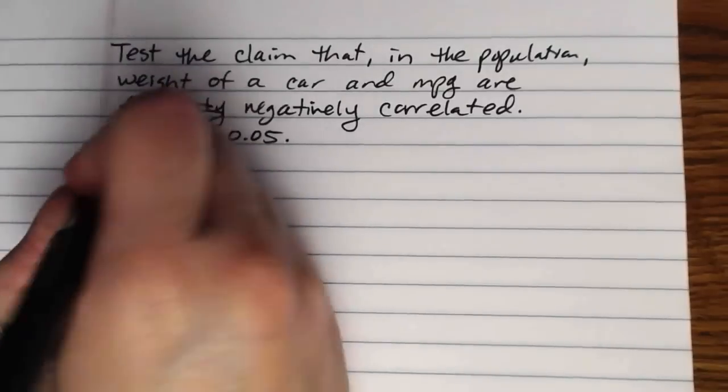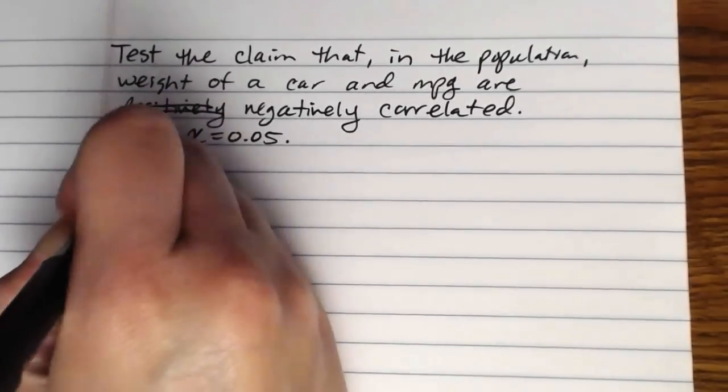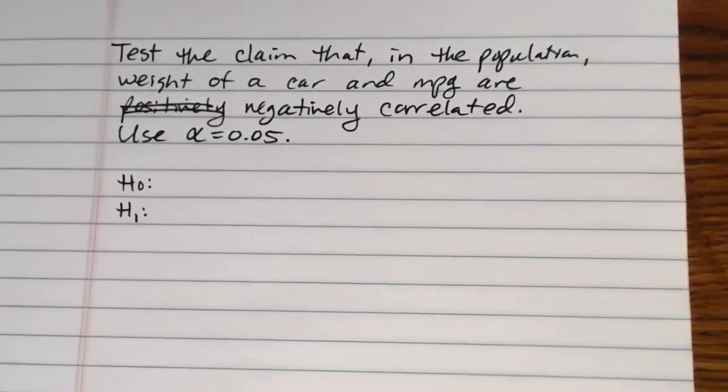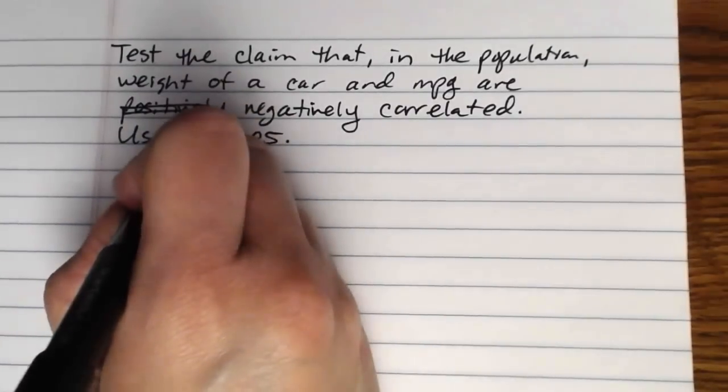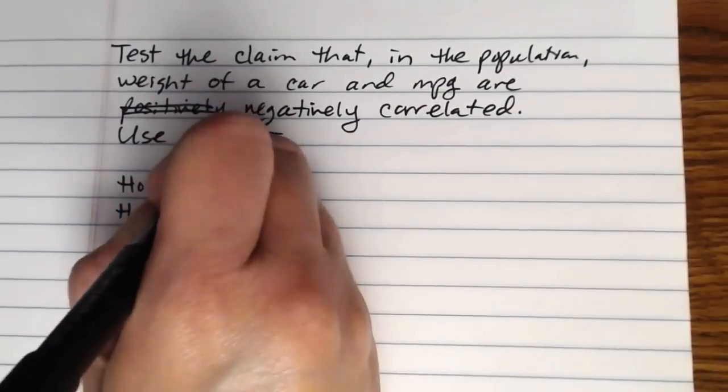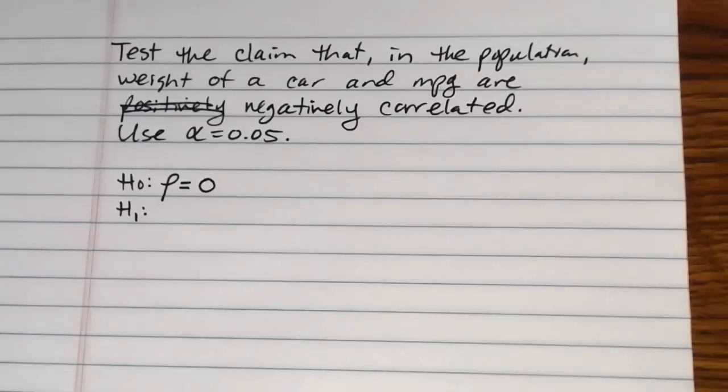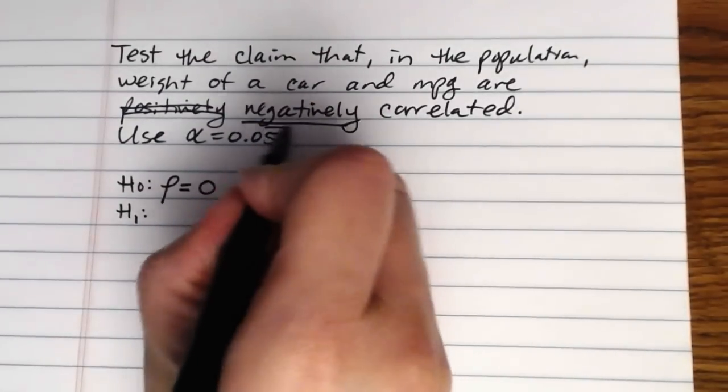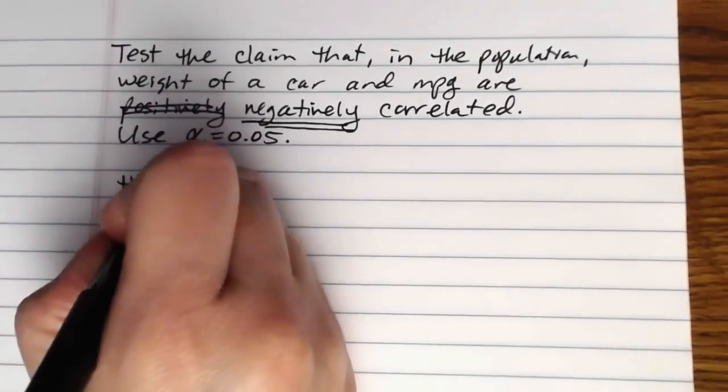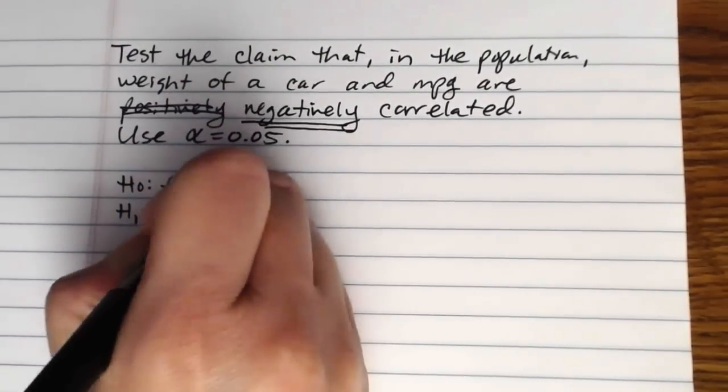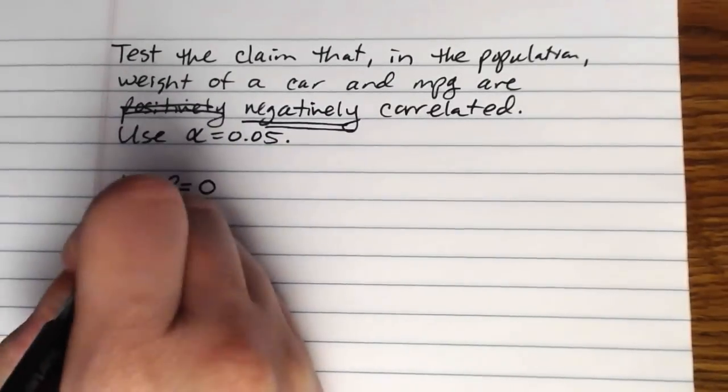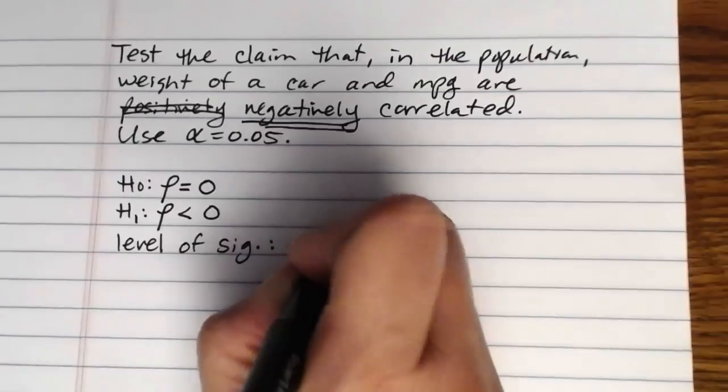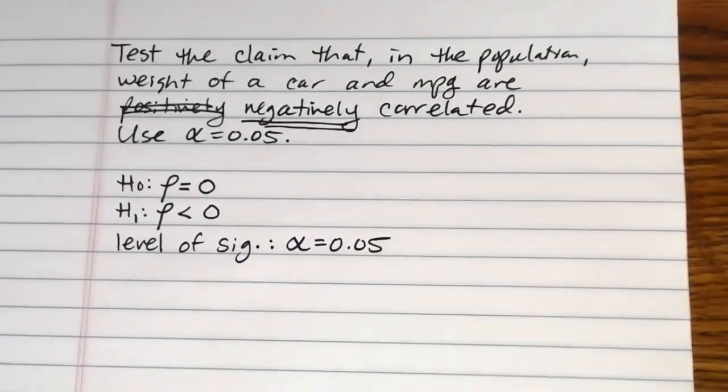So if that's what I want to test, I want to start by defining my null and alternate hypotheses. Here, we're just going to use that standard five-step hypothesis testing procedure. My null hypothesis would be to assume that there's no correlation in the larger population, so rho is zero. If I'm testing for a negative correlation in the larger population, my alternate hypothesis is going to be that rho is less than zero, and the level of significance that I'm using is five percent.